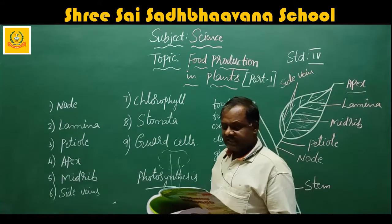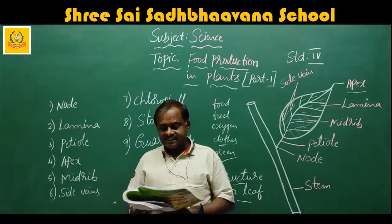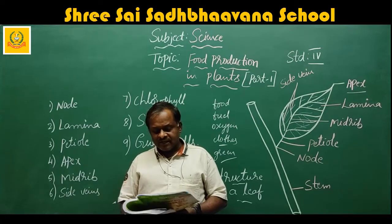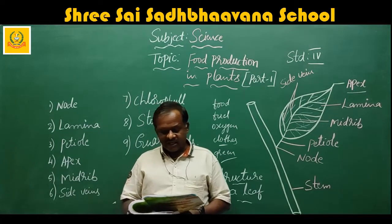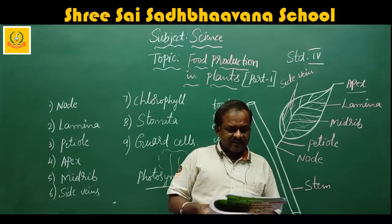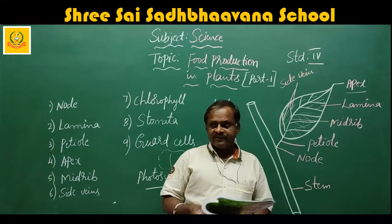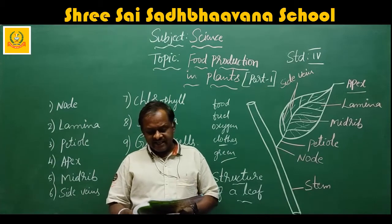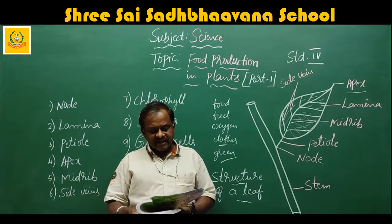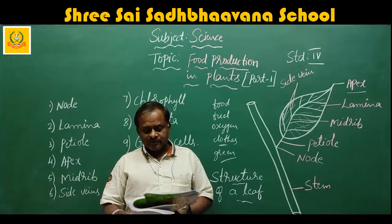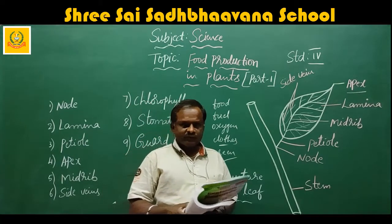The lowest layer of cells has many small openings called stomata — singular: stoma. The stomata are guarded by the guard cells. The guard cells regulate the opening and closing of the stomata. During photosynthesis, a leaf takes in carbon dioxide and gives out oxygen and water vapour through the stomata.